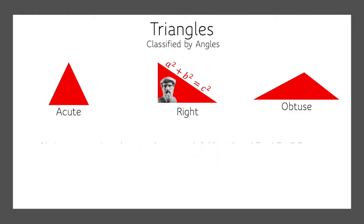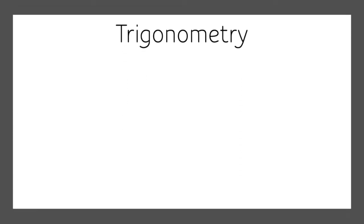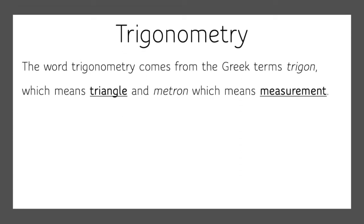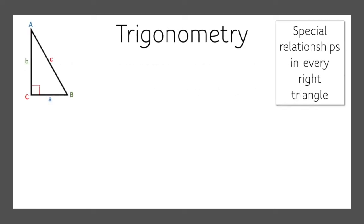The problem is that not every triangle can be special, like the 45-45-90 or the 30-60-90, but every triangle does have special relationships built in, and that's where trigonometry comes in. The word trigonometry comes from the Greek term trigon, which means triangle, and metron, which means measurement. I'm going to introduce you to three special relationships that are in every right triangle.